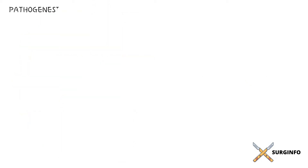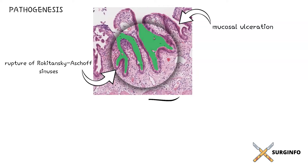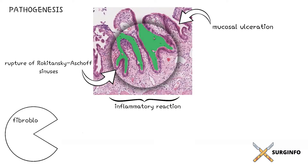The pathogenesis of xanthogranulomatous cholecystitis may be related to extravasation of bile into the gallbladder wall from rupture of Rokitansky-Aschoff sinuses or by mucosal ulceration. This event incites an inflammatory reaction in the interstitial tissue, whereby fibroblasts and macrophages phagocytose the biliary lipids in bile, such as cholesterol and phospholipids, leading to the formation of xanthoma cells.